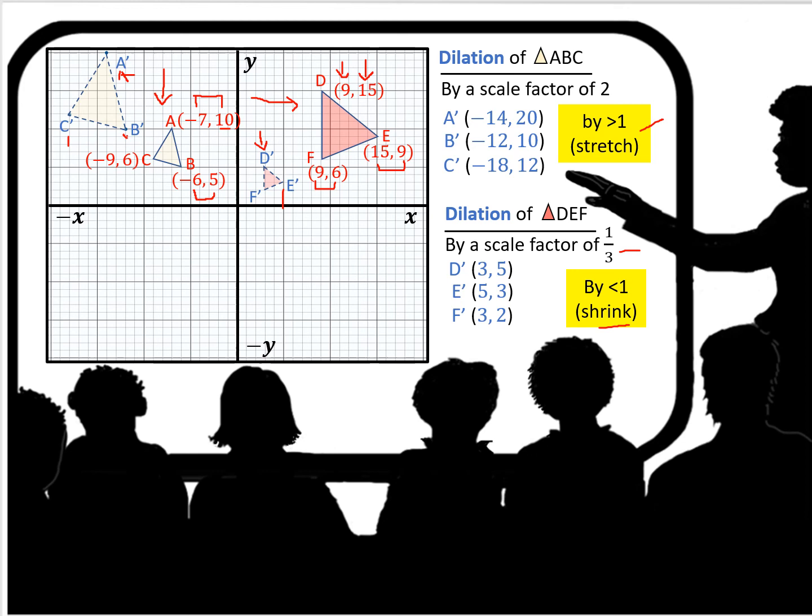Our E coordinate of 15, 9 in our original is going to become 5 and 3. And our xy coordinates for F, originally at 9, 6, is going to become 3 and 2. So there you have the dilation. Remember, if it's a dilation scale factor of 2, a number that's greater than 1, it's going to be stretching the figure. And if the scale factor is less than 1, it's going to be virtually shrinking the figure.